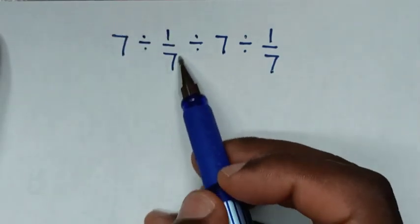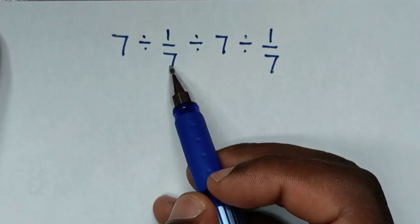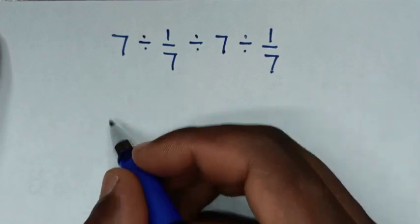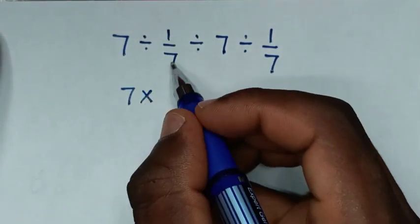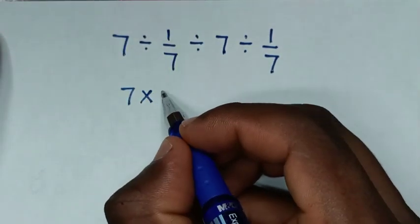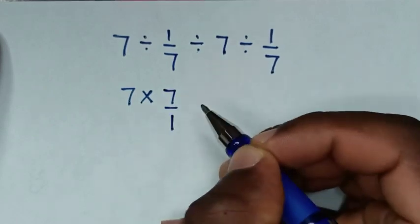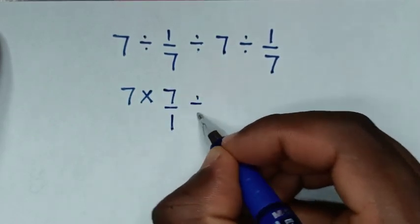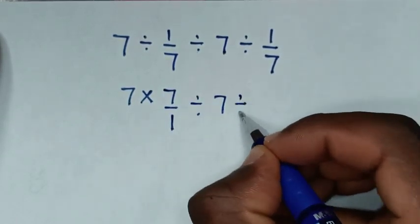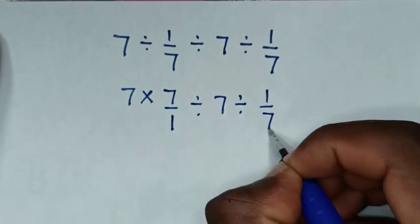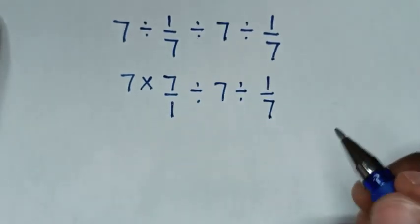We do the first operation: 7 divided by 1 over 7, which is the same as 7 times the reciprocal of 1 over 7, which is 7 over 1. Then divide by 7, then divide by 1 over 7.